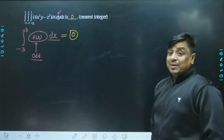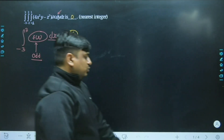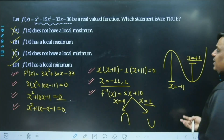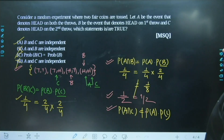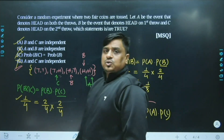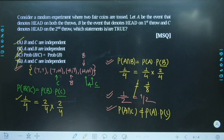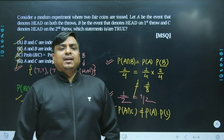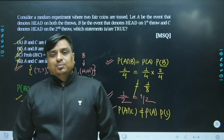If you find any discrepancy, you can put it in the YouTube comment box so we have a reference for corrections. To summarize: the first question was from triple integration with answer 0, the second was from calculus (maxima and minima), the third was from linear algebra (determinants), and the last was from probability. Hope you guys are doing extremely well. We will meet in more videos — we will also be taking a few mathematics questions from the Mechanical branch. Bye-bye, take care.